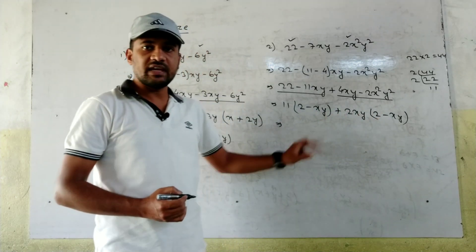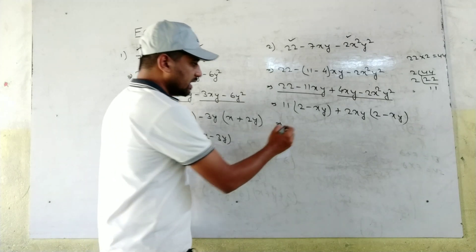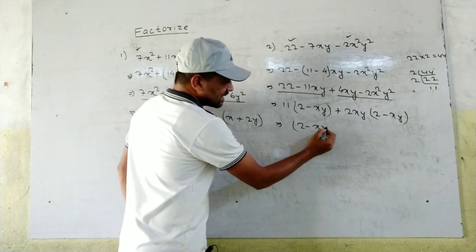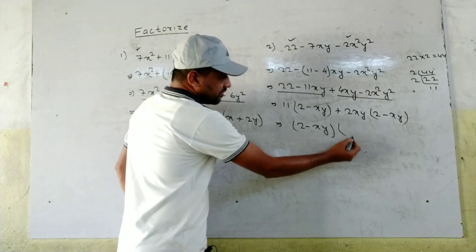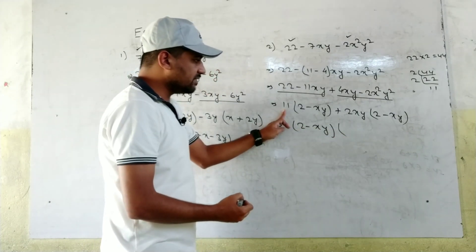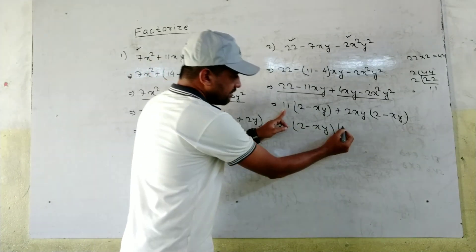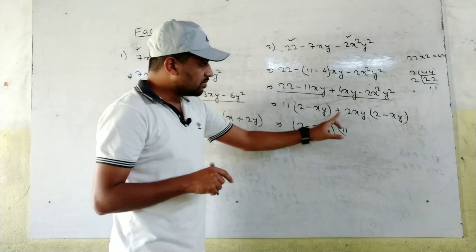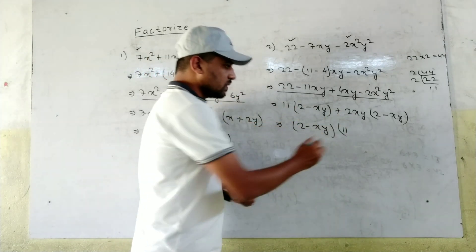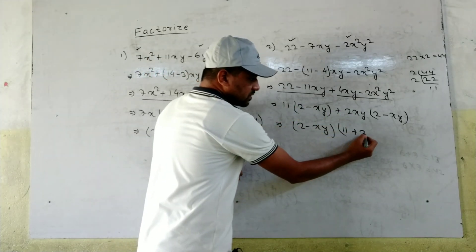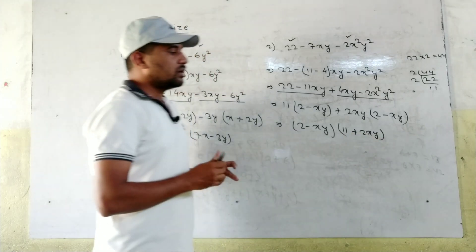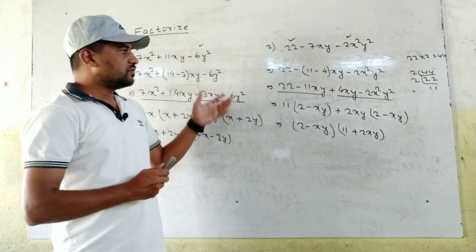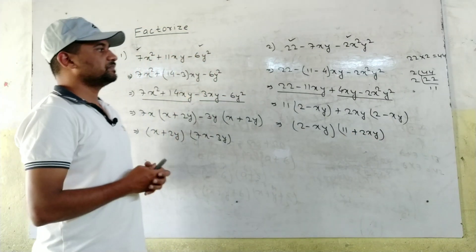Now (2 - xy) appears in both groups. Take (2 - xy) as common. What remains is 11 from the first group and +2xy from the second group. So the final answer is: (2 - xy)(11 + 2xy). Hope you understand these two factorizations.